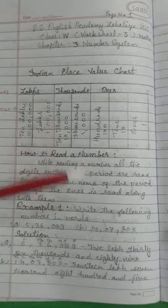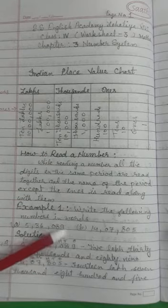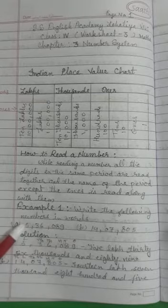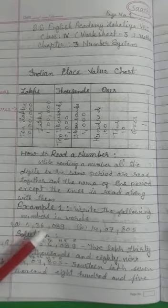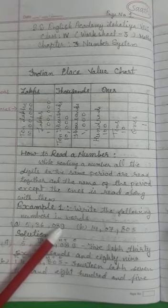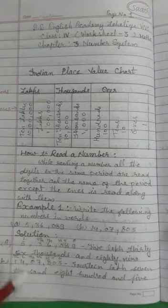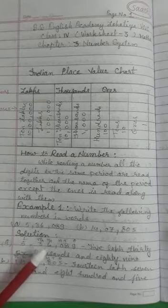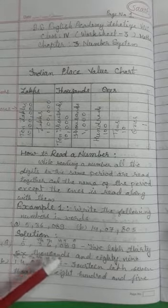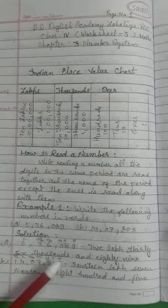See this example. The place values are: ones, tens, hundreds, thousands, ten thousands, and lakh. Then we will read: five lakh, thirty-six thousand and eighty-nine. I have read all periods together. You will put a comma after each period — after the ones period and after the thousands period.